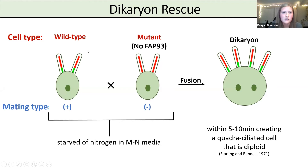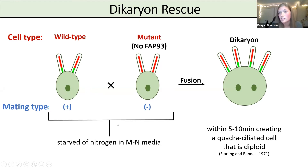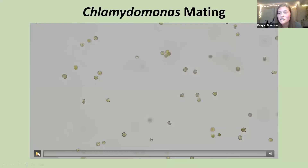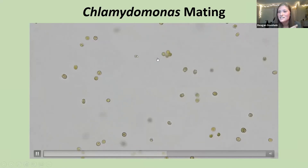To answer my research question, I'm using a technique specific to Chlamydomonas called dikaryon rescue. You have two cell types: wild type, shown with green FAP93 at the base of the cilium, and a mutant with no FAP93. You starve them of nitrogen to encourage mating. Once mixed, they form a large dikaryon cell with cytoplasm, nucleus, and cilia from both cells. The theory is that FAP93 from the wild-type cell will be shared with the mutant cilia, so we'd see FAP93 rescued on all four cilia. This video shows Clamie mating in the lab — you can see clusters forming and even one cell swimming in a circle up in the top left.